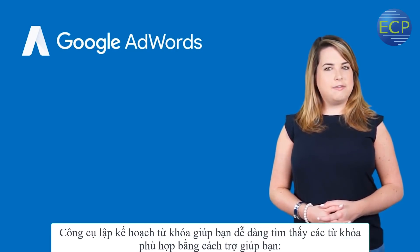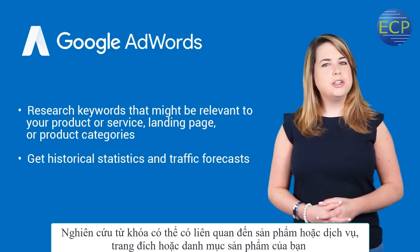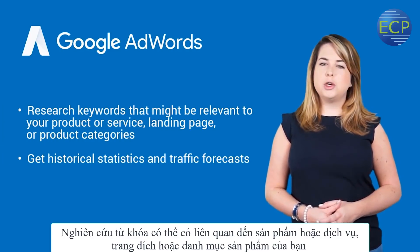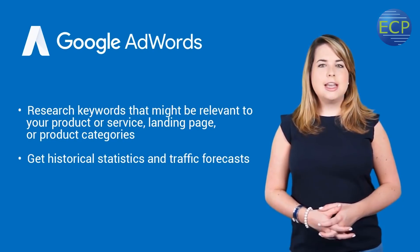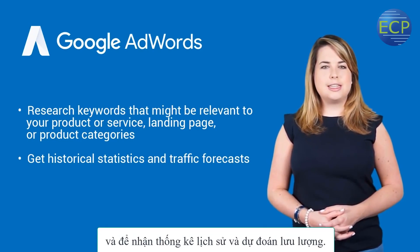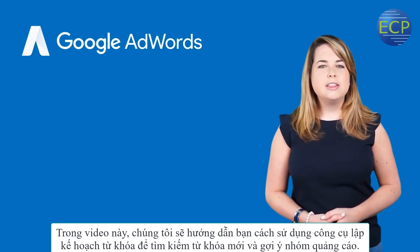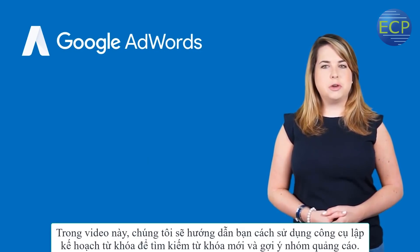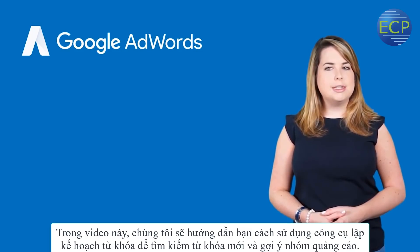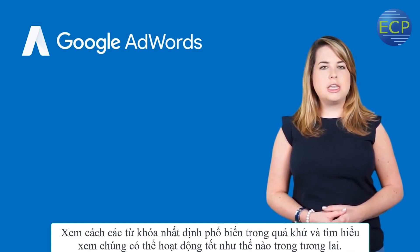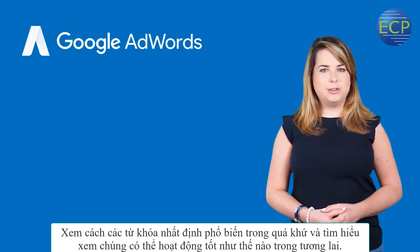Keyword Planner makes it easy to find the right keywords by helping you research keywords that might be relevant to your product or service, landing page, or product categories, and to get historical statistics and traffic forecasts. In this video, we'll show you how to use Keyword Planner to search for new keywords and ad group ideas, see how popular certain keywords were in the past, and learn how well they might perform in the future.